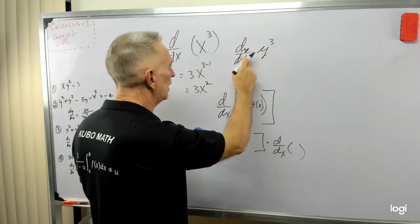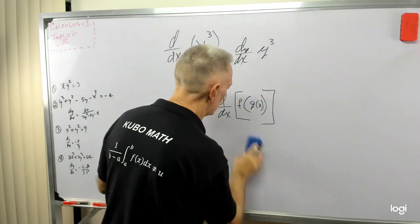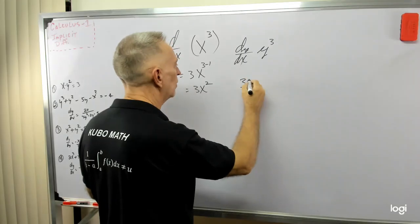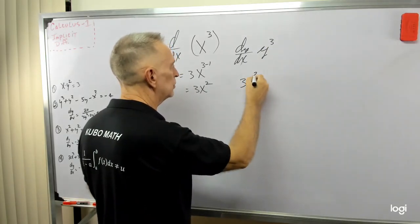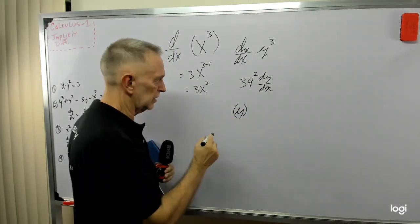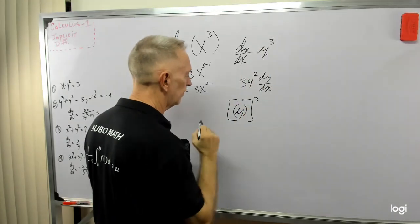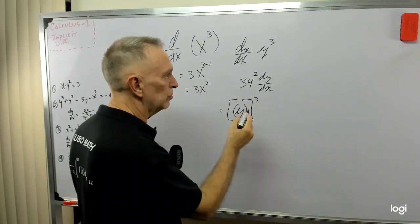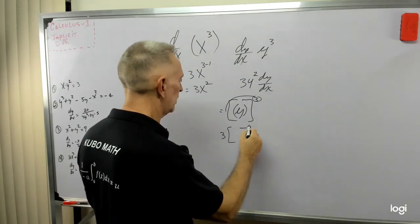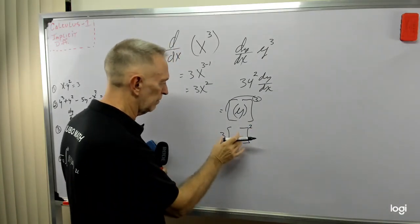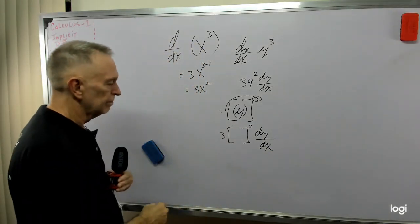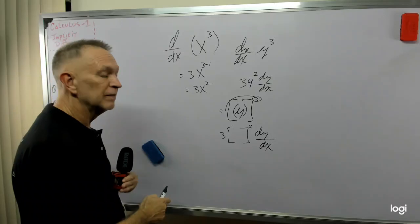We're trying to take the derivative of y cubed with respect to x. We can work the chain rule on that to end up with dy dx. So that would equal 3y squared, dy dx. It's like y is in the parentheses and we were cubing it. We perform the general power rule, bring the 3 down, 3 times y to the 3 minus 1, which is y squared, times the derivative of the inside, which is dy dx. First time I saw that, my hair caught on fire.